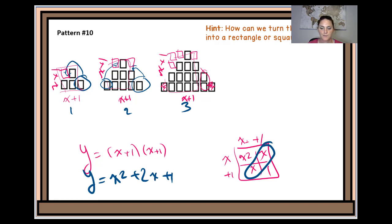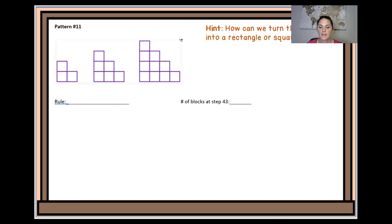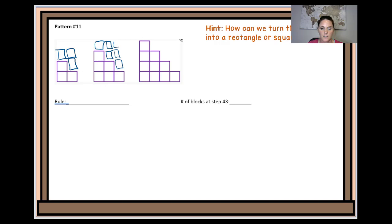Okay, one more example. For this one, again the hint is: how can we turn this pattern into a rectangle or square? I'd like you to pause the video and think about how we can do that. In order to make this a rectangle or square, what I'm going to do is double this pattern and turn it into a rectangle — filling in all the empty gaps and adding an extra row at the top to double the pattern.